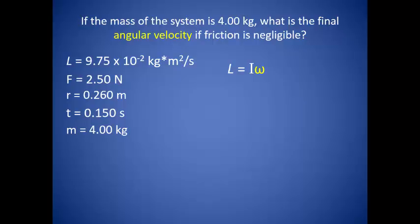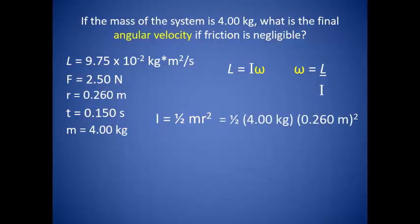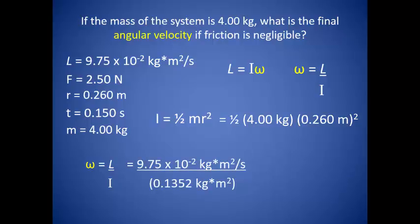So what if the mass of the system is 4 kilograms? What is the final angular velocity if friction is negligible? We know that angular momentum is related to angular velocity in terms of the object's moment of inertia, so if we can find the moment of inertia and the angular momentum, we can easily determine the angular velocity. Looking at figure 10.12 in the book, we find that the moment of inertia for a rotating disk is one half the mass times the radius squared. We know all of these values, and we determined the angular momentum in the first part of this problem, which means we can solve for the angular velocity: 0.721 radians per second.